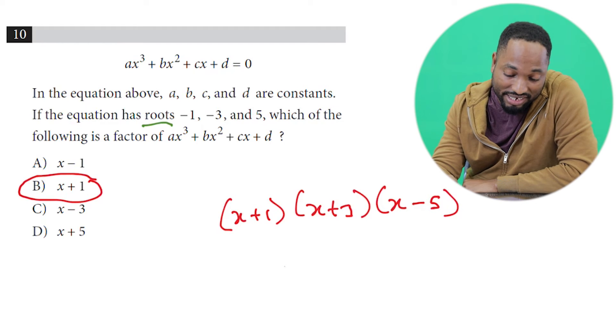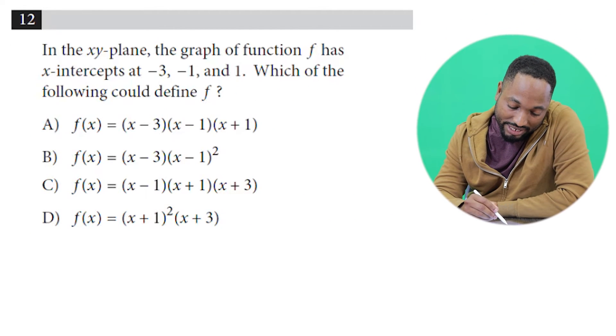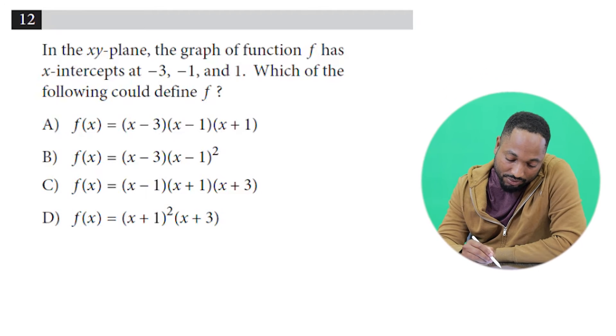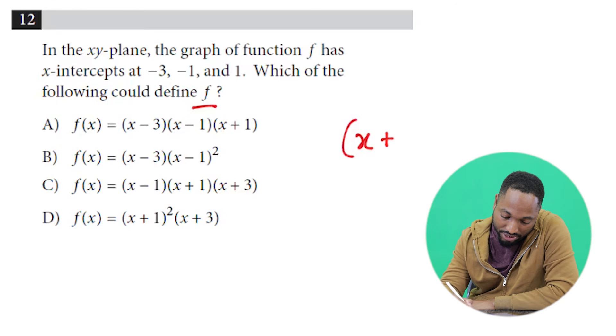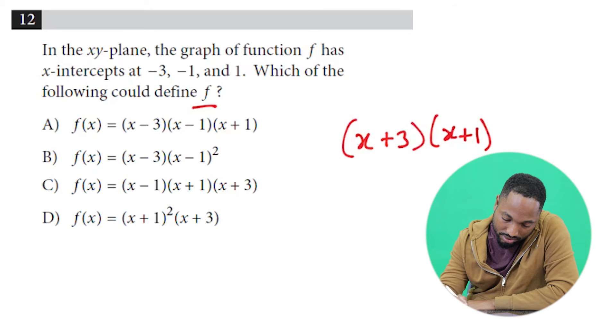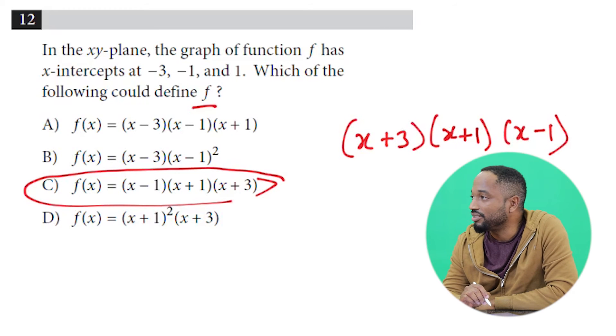Here's another question. Once again, we are given the x-intercepts: -3, -1, and 1. Which of these could be the function f? Let's see, it's x + 3 by x + 1 by x - 1. Who is doing that? C is doing that. C is the answer for that one, right, yeah.